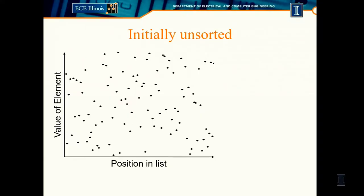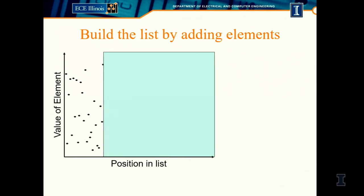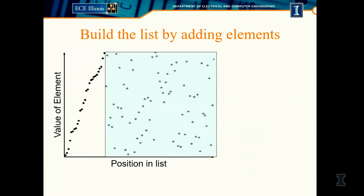We have this initially unsorted set of data. Instead of selection sort which blocks horizontally, insertion sort blocks vertically. The idea is: I've built up a sorted portion of the list, and now I have a new element I encounter. I have to figure out where it goes and insert it at the correct spot.